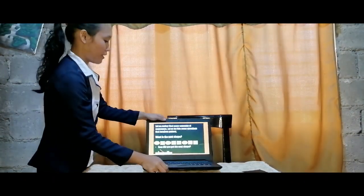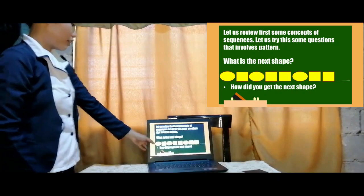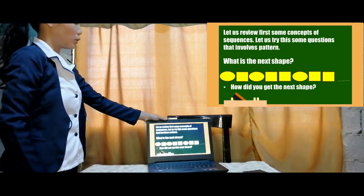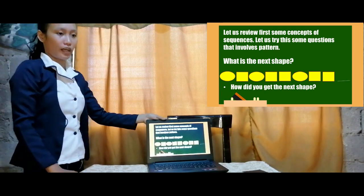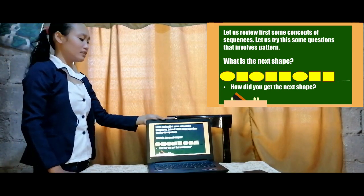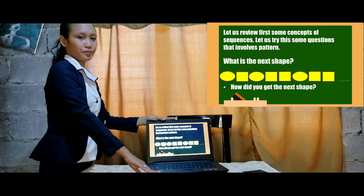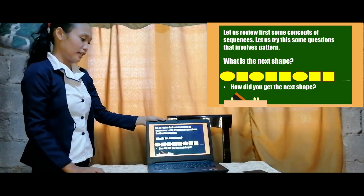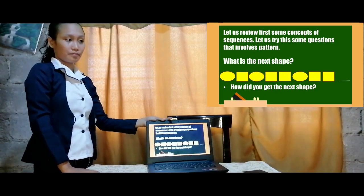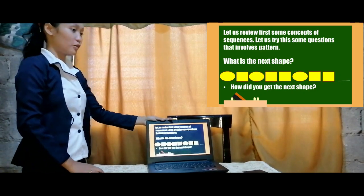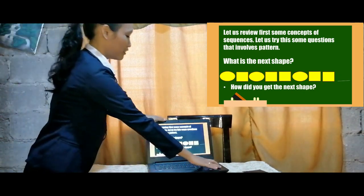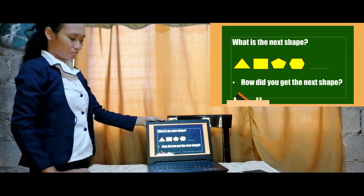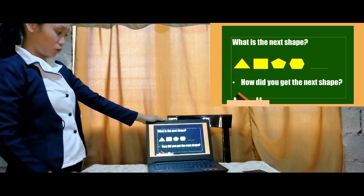Before we proceed to the discussion of arithmetic sequence, let us review first some concepts about sequences. We have here circle, square, circle, square, square, square. What do you think is the next shape? Very good, square, square. How did you get the next shape?